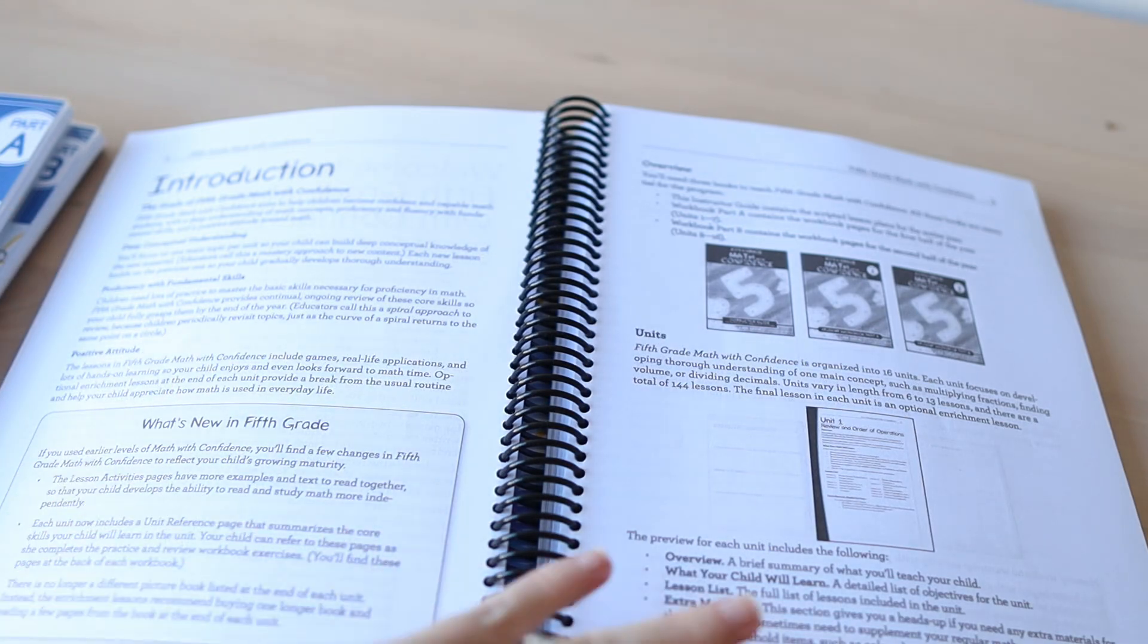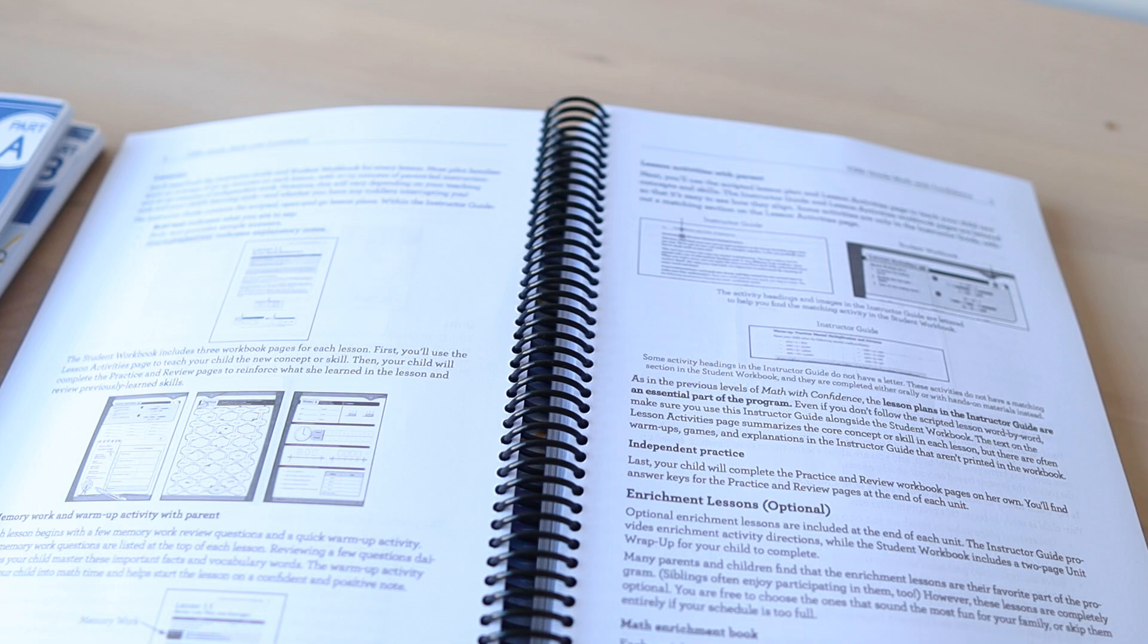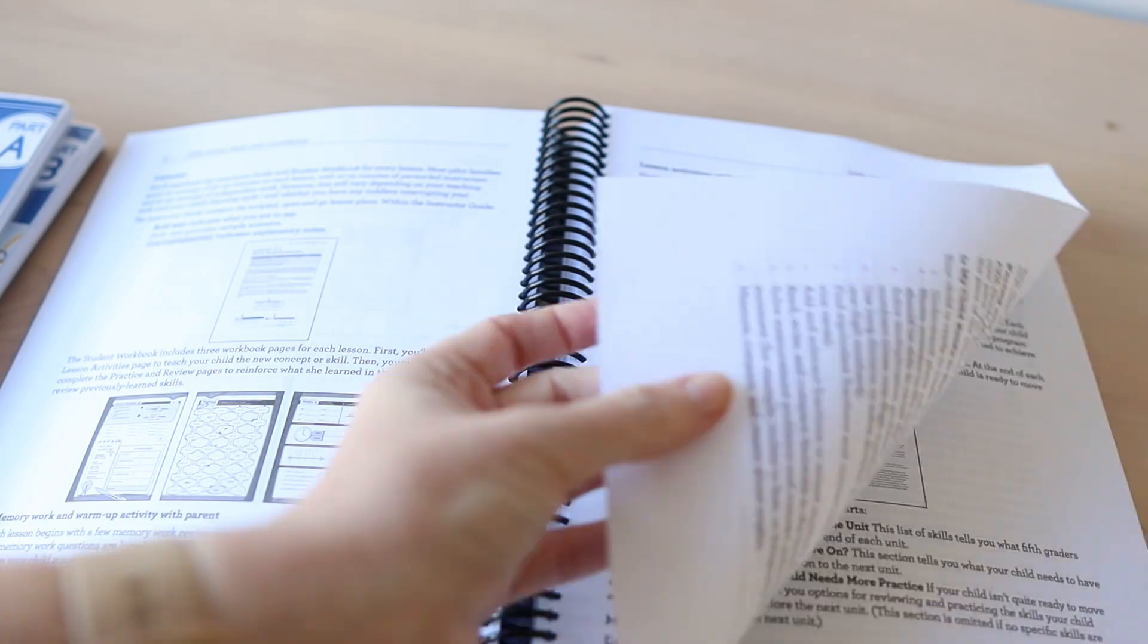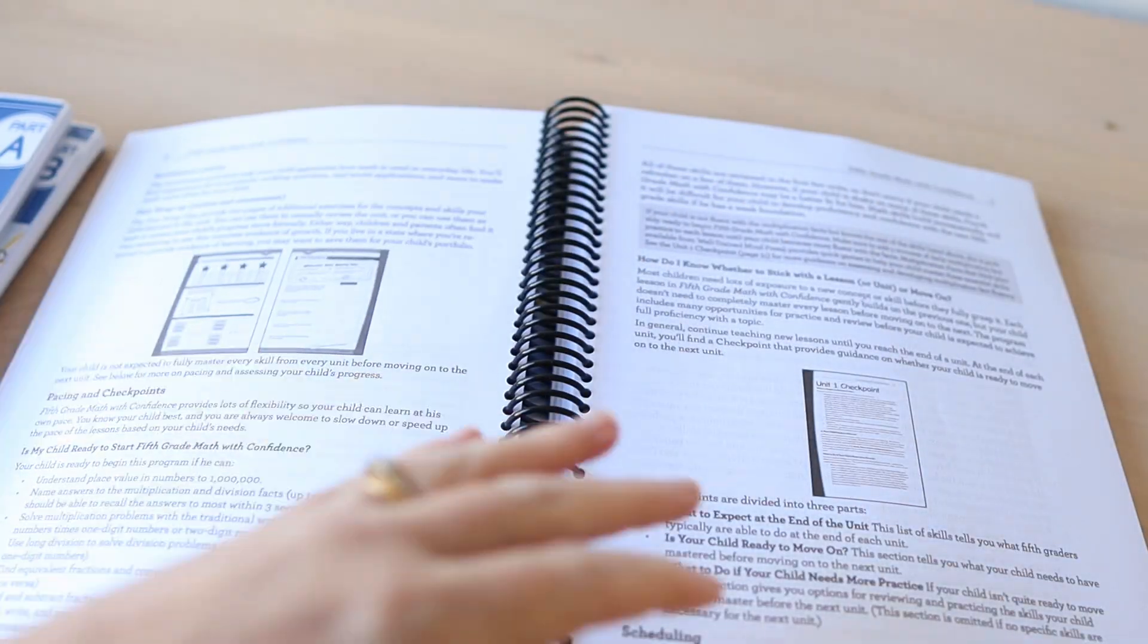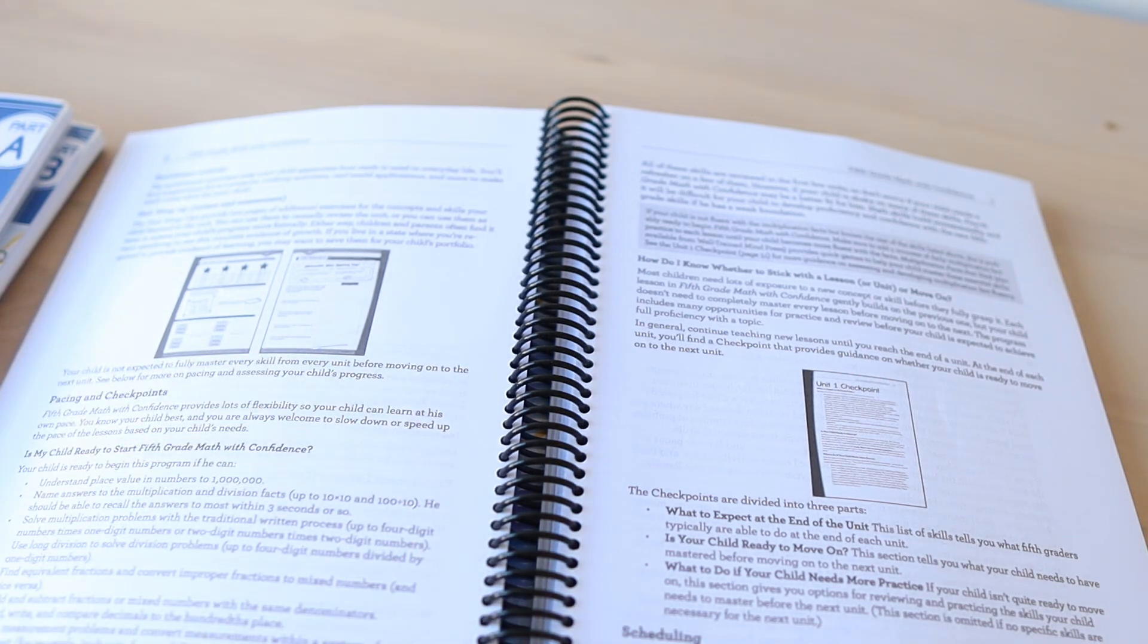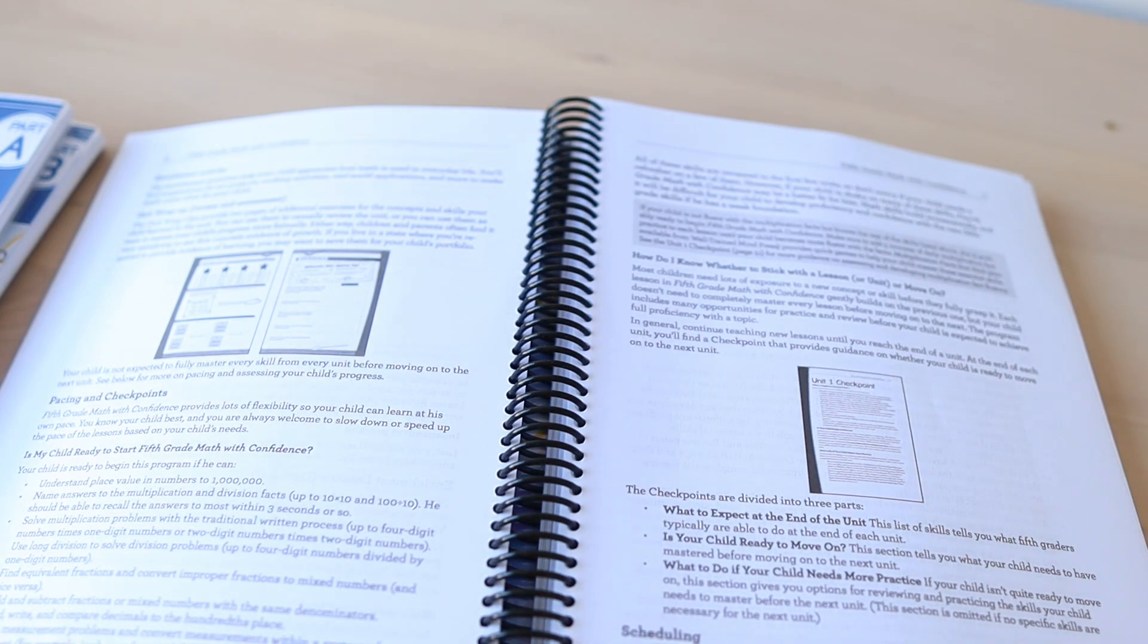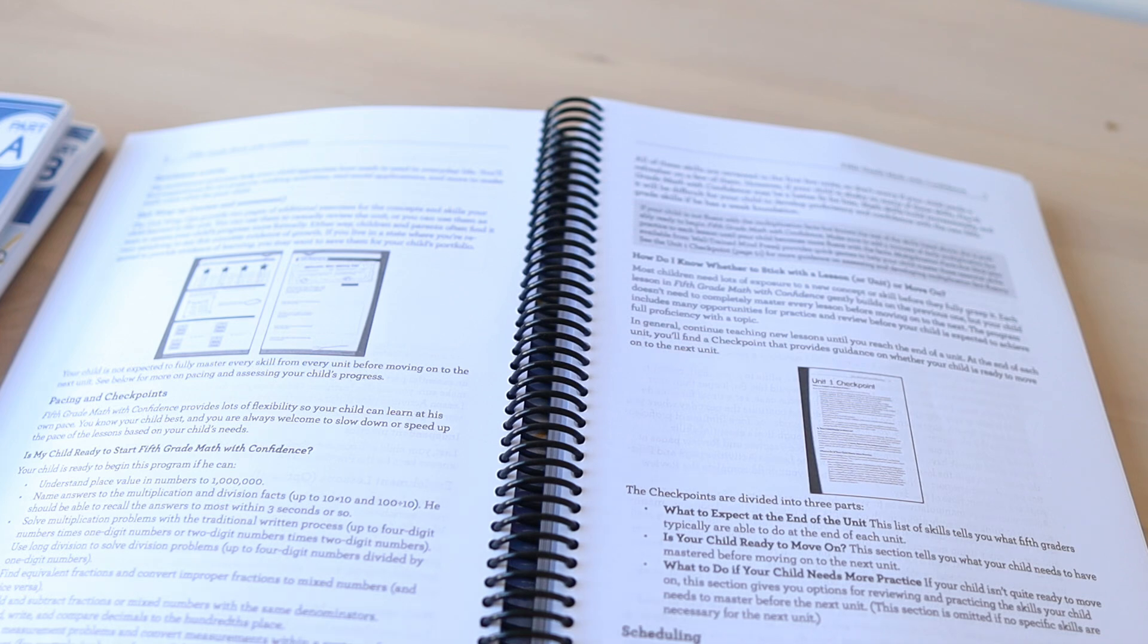In the beginning of the book there's a lot of information on how to use it, how the pages are laid out, how to schedule it. It's just like fourth grade and third grade where it's split into units, not split into weeks. So you've got 16 units in this level. There are 144 lessons. 128 are regular lessons and 16 are optional enrichment lessons.